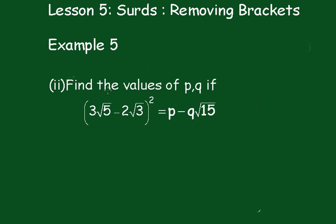This is an examination style question. We have to find the values of p and q if (3√5 - 2√3)² = p - q√15. Now we'll have to find the left hand side.